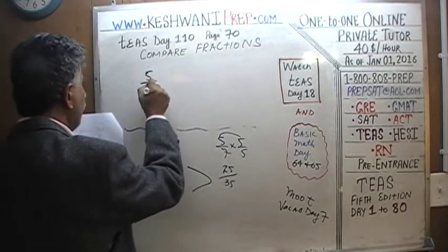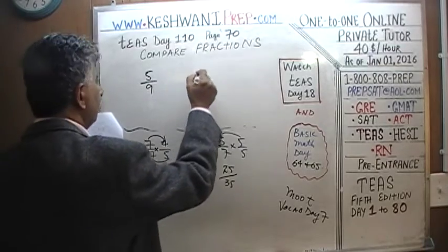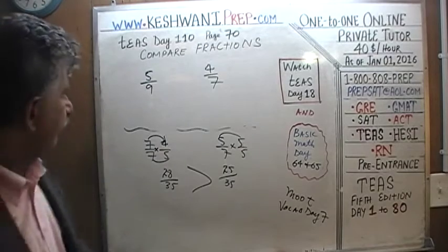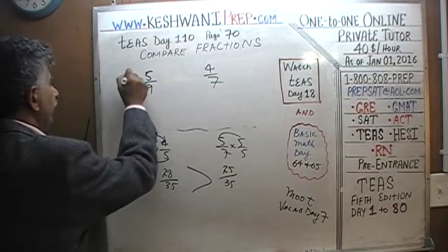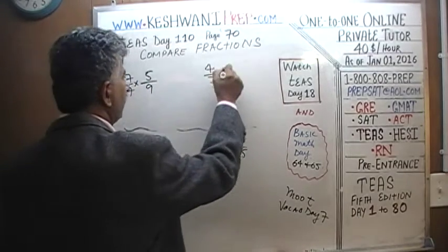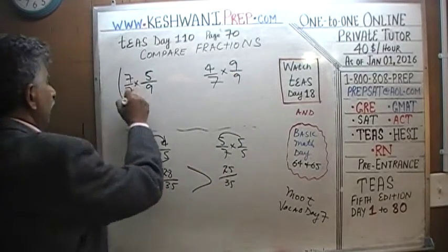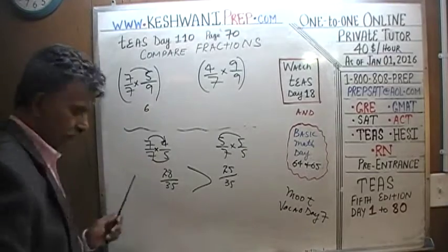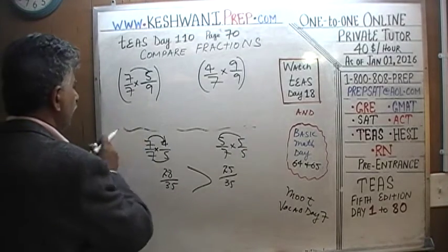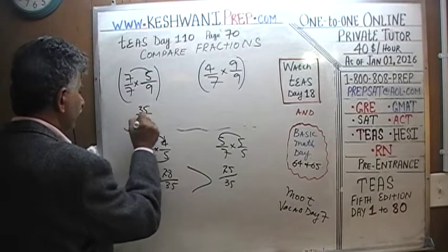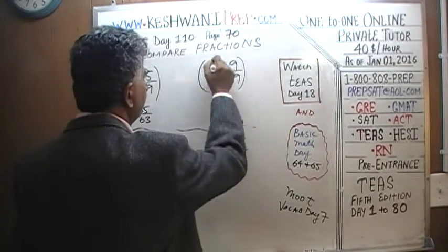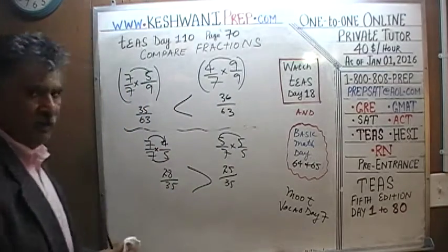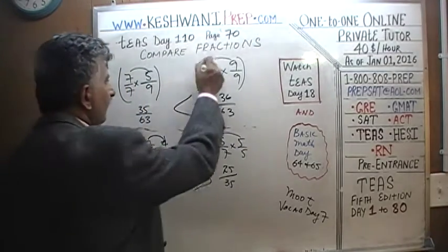One last one: five-ninths versus four-sevenths. Multiply the first fraction by seven over seven and the second by nine over nine. We get thirty-five over sixty-three versus thirty-six over sixty-three. Thirty-six is more than thirty-five, so four-sevenths is bigger than five-ninths.